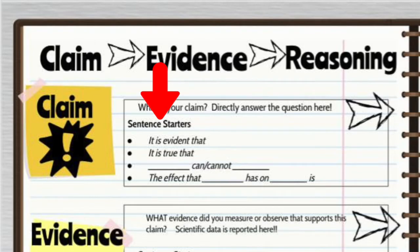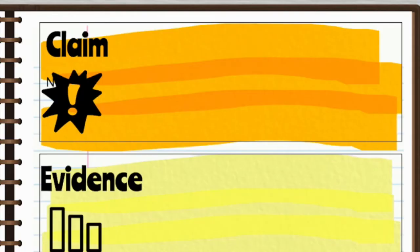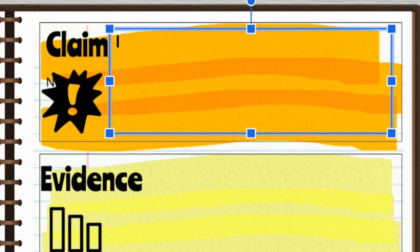To write your claim, I've given you a few sentence starters on the left-hand side of the page. You can use one of those sentence starters with our discovery. So in this case, I'm writing, 'It is evident that brand 2 of the paper towels is the most absorbent brand of paper towels.'